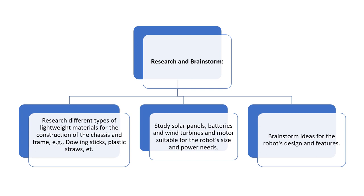The next step is research and brainstorming with your team. Research different types of lightweight materials for construction of the chassis and frame — for example, doweling sticks and plastic straws. Also research sturdy solar panels, batteries, wind turbines, and motors suitable for the robot's size and power needs. Brainstorm ideas for the robot's design and features.